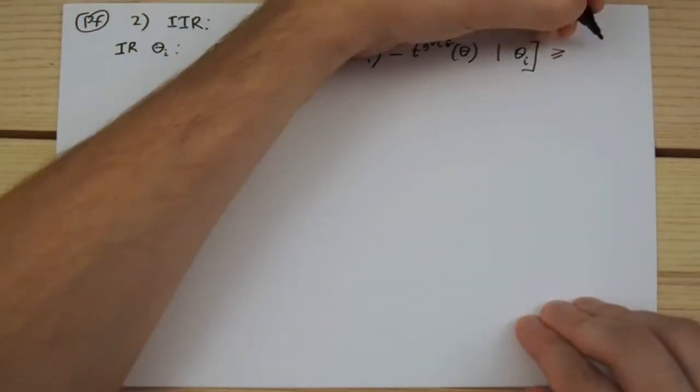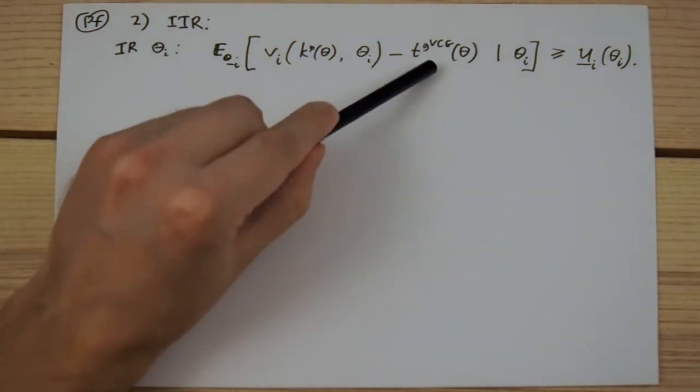The interim IR constraint for an arbitrary type theta_i of an arbitrary player i looks as follows. If we plug in the generalized VCG transfers, we get the following expression.